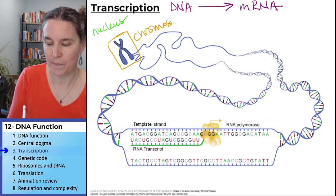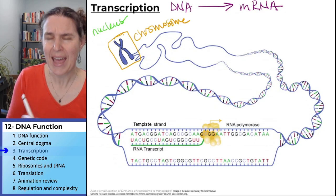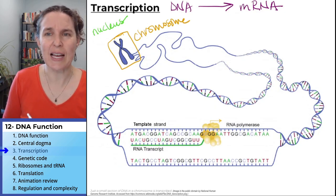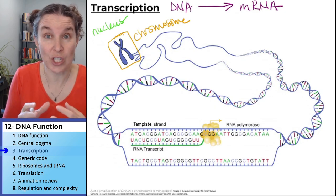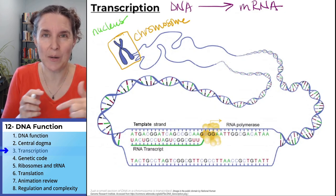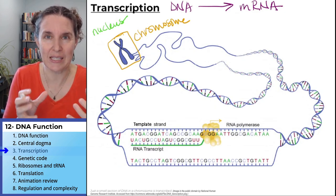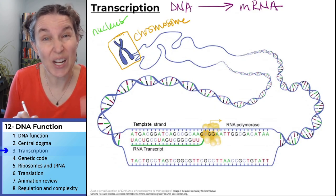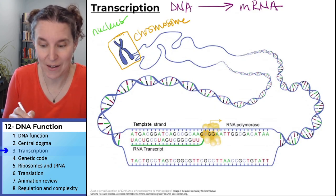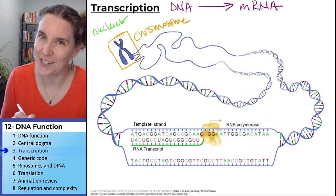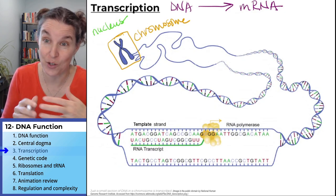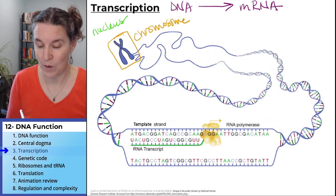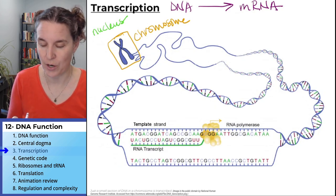That's a chromosome. Chromosomes are just wound up pieces of DNA. You can unwind your chromosome, and in fact you must unwind your chromosome if you're going to make a copy of a piece of it and turn it into messenger RNA.